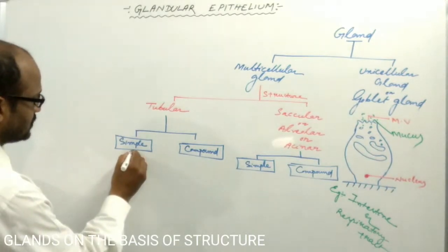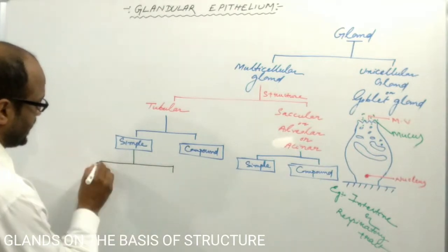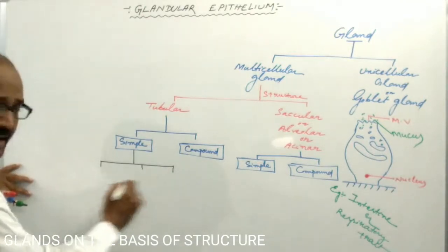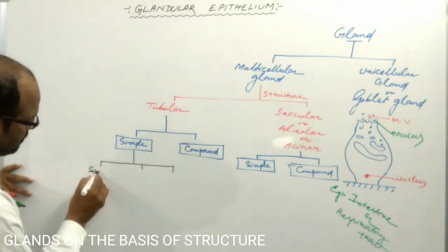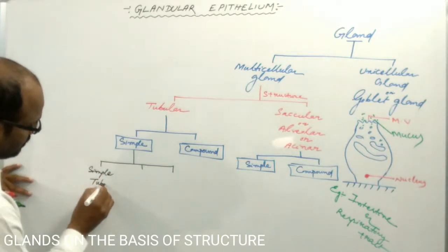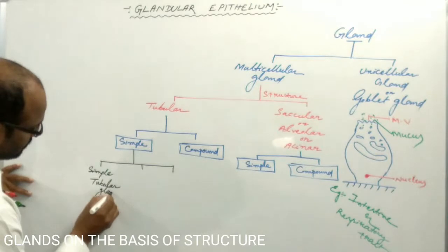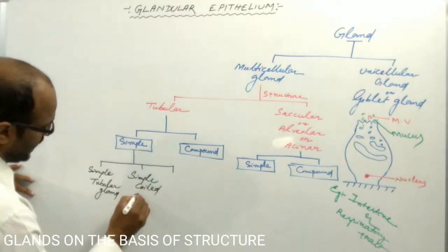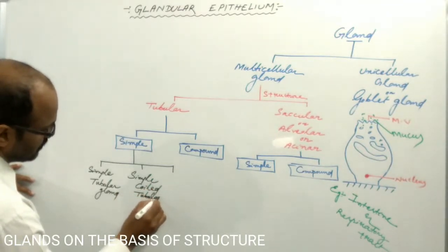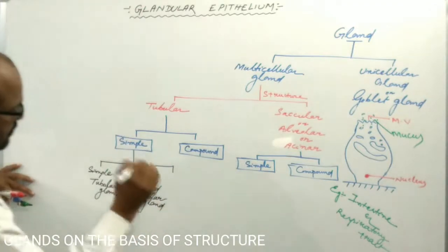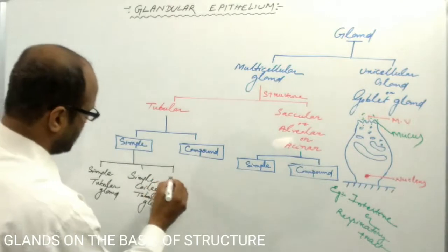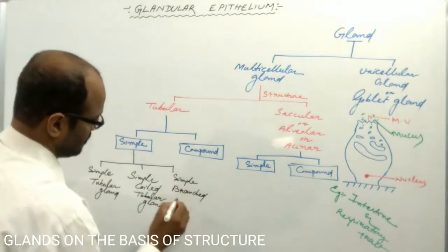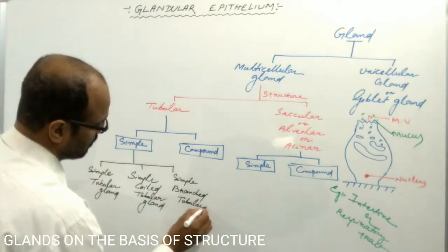The simple tubular gland, having a single duct, may again be three types: simple tubular gland, simple coiled tubular gland, and simple branched tubular gland.